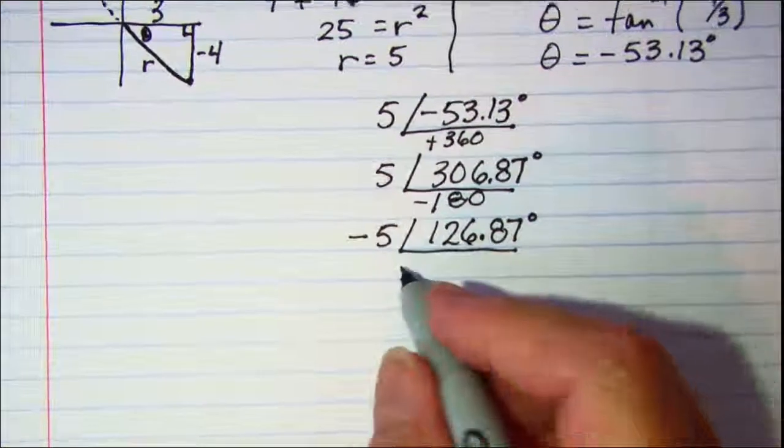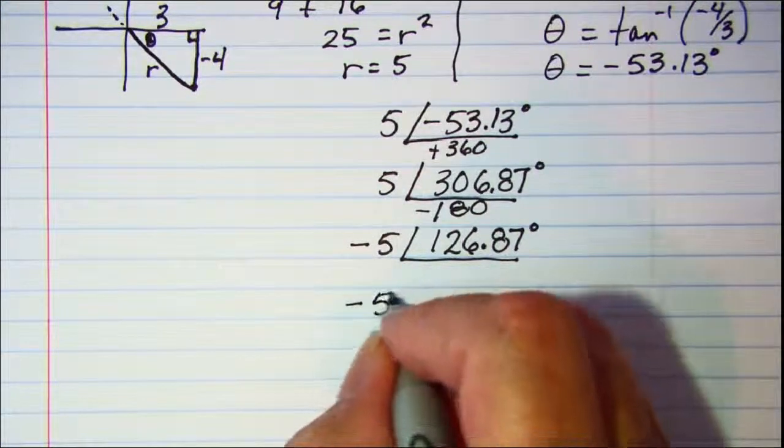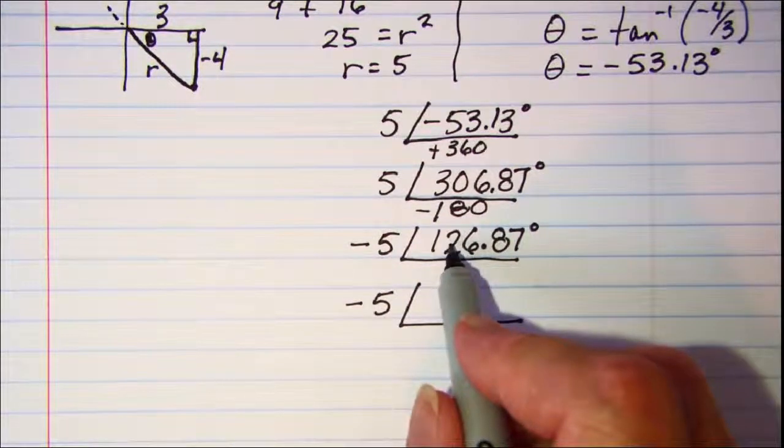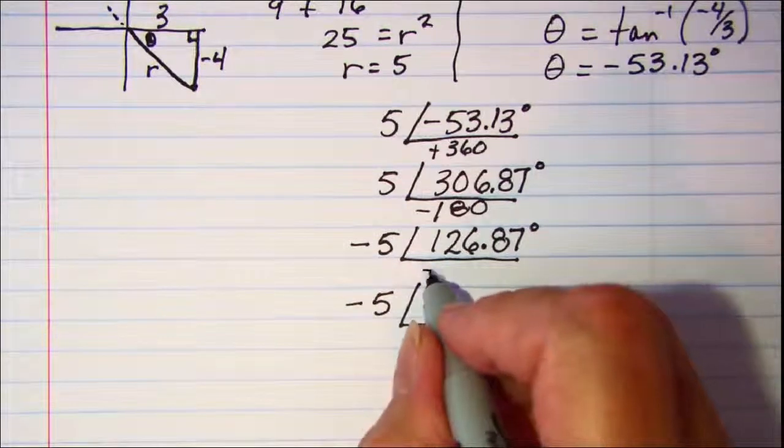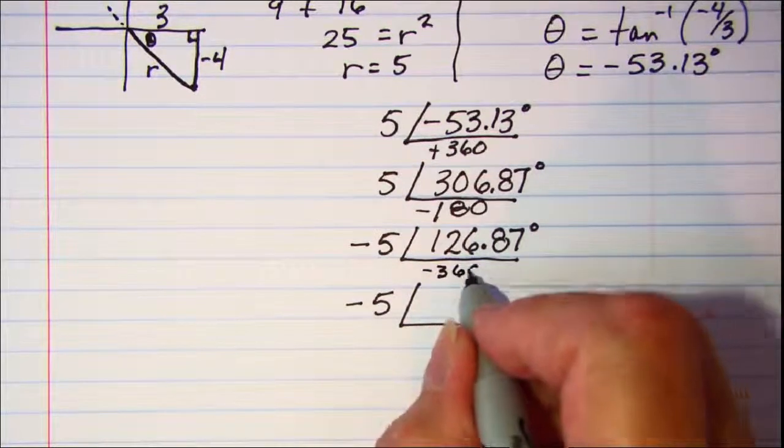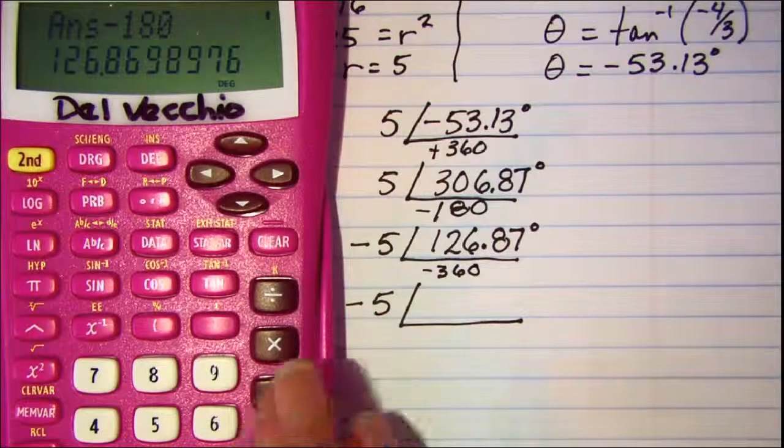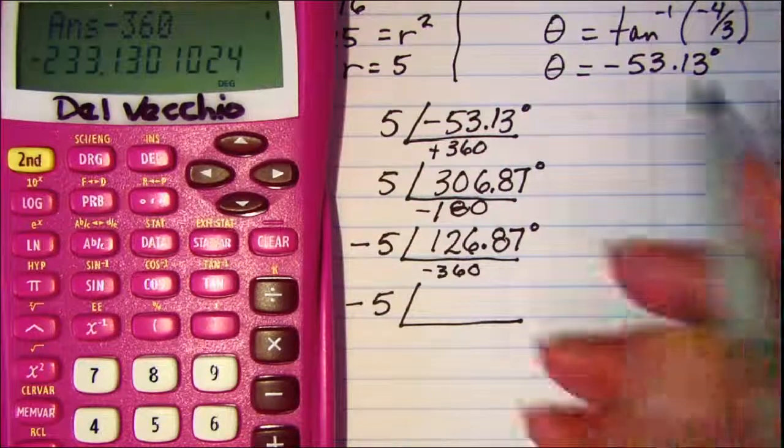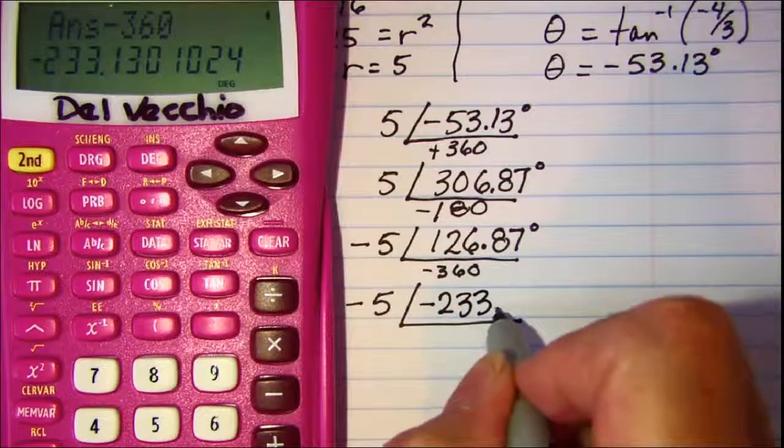And then let's get another negative r value, but this time we want our angle to be negative. So we'll subtract 360 from this, and we get -5∠-233.13°.